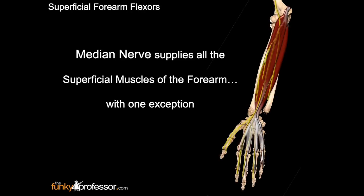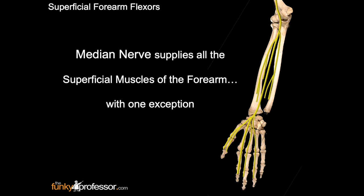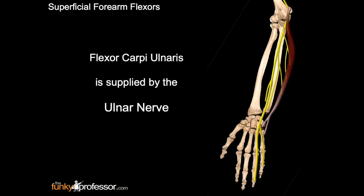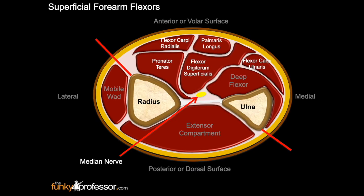The median nerve supplies all the superficial muscles of the forearm with one exception: flexor carpi ulnaris is supplied by the ulnar nerve. In this diagram, the median nerve may be seen next to the interosseous membrane. The ulnar nerve is demonstrated between the deep flexor compartment and flexor carpi ulnaris.